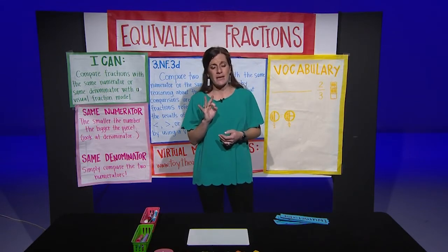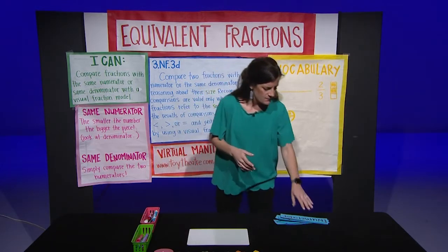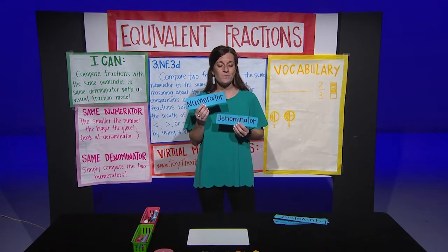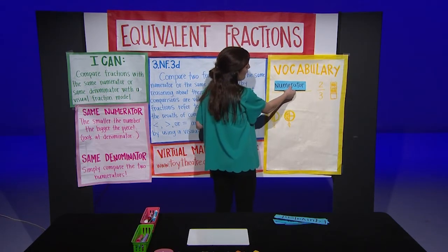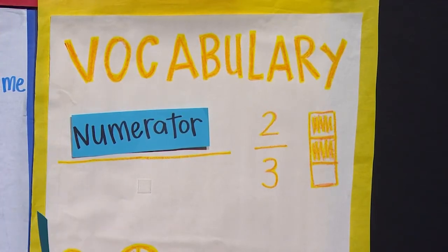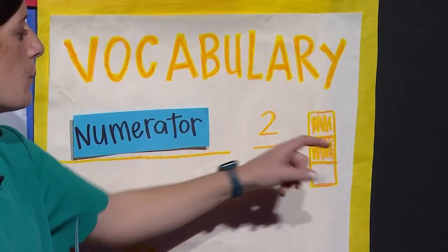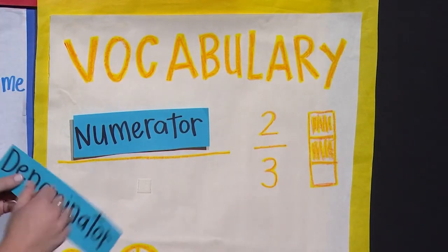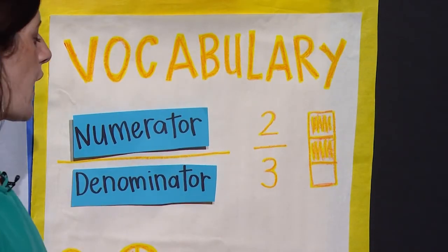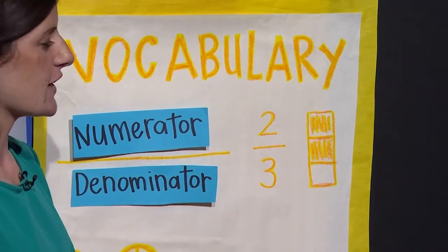Three words stick out to me immediately when reading this standard. The first two should be pretty obvious, and they are numerator and denominator. A numerator is what goes on the top of the fraction, and it refers to the part of the whole that we're describing. For instance, in our example here, it is two because there are two parts shaded. The second word, denominator, refers to our total or our whole. So here there are three parts, so three is our denominator.